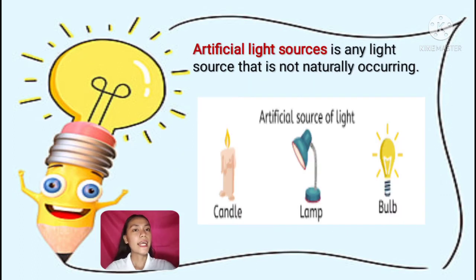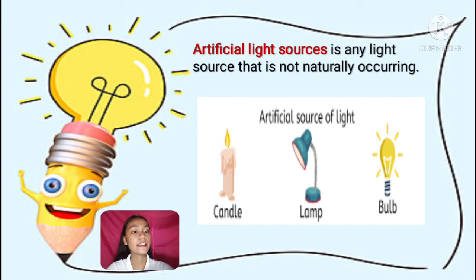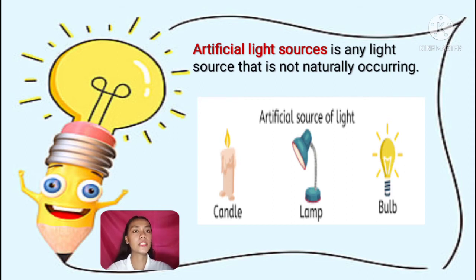The second source of light is artificial light sources — any light source that is not naturally occurring. Examples of artificial sources of light are candles, lamps, and bulbs. In other words, artificial light sources are man-made.